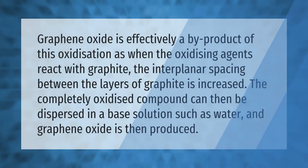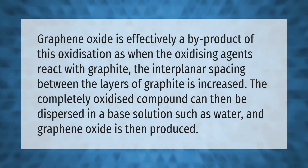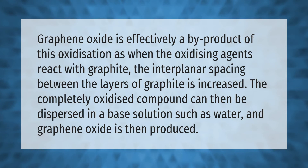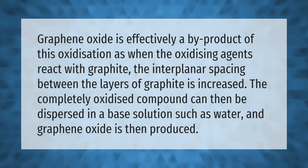Graphene oxide is effectively a byproduct of this oxidization. When the oxidizing agents react with graphite, the interplanar spacing between the layers of graphite is increased. The completely oxidized compound can then be dispersed in a base solution such as water, and graphene oxide is produced.